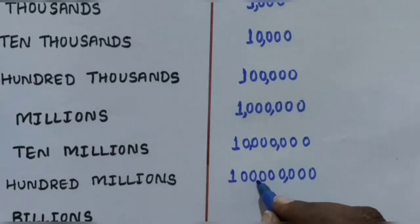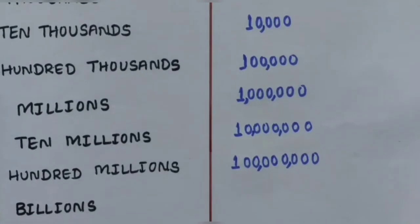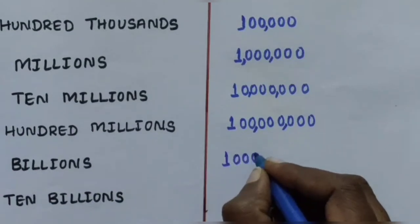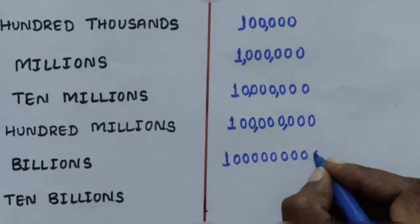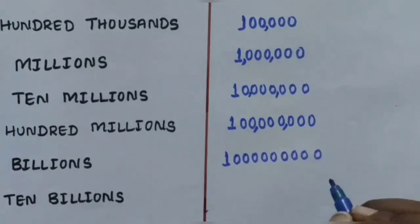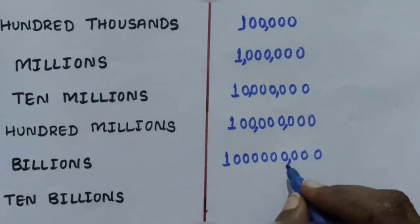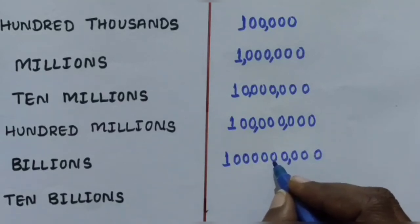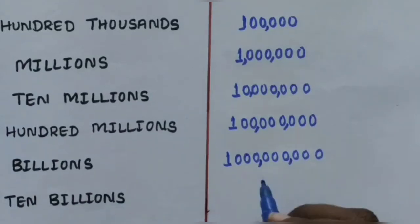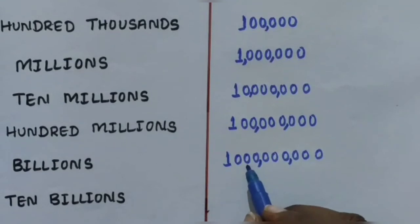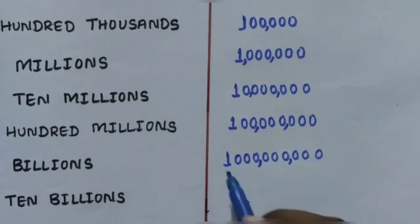Next is Billions, written as 1,000,000,000 - one followed by nine zeros. The first comma is applied after thousands, the second comma for millions (Thousands, Ten Thousands, Hundred Thousands, Millions), and the third comma is applied for billions: Millions, Ten Millions, Hundred Millions, and Billion.